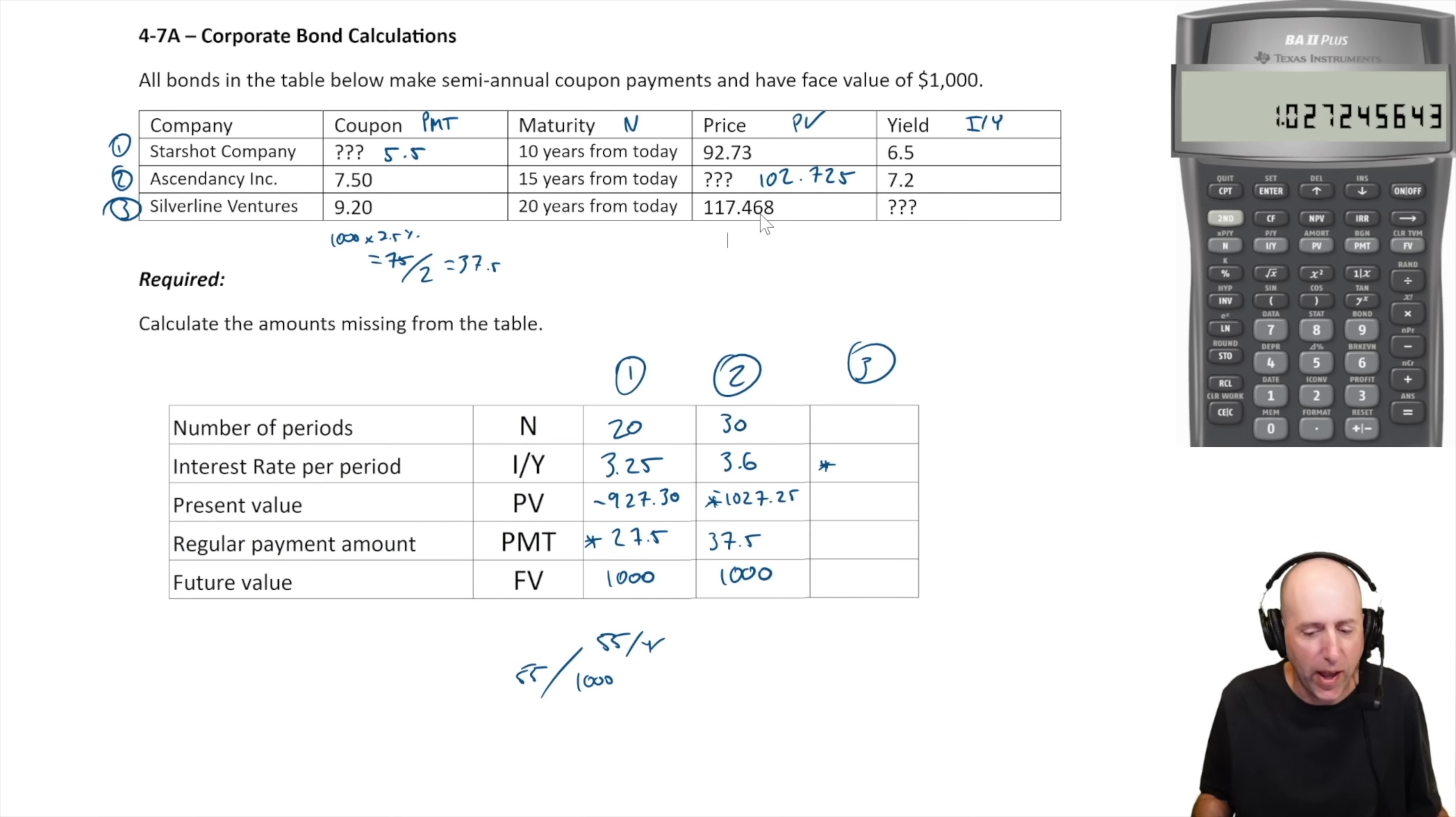Last one. Number of periods for bond number three, Silverline Ventures, is 20 years rather, so 40 semi-annual periods. Our PV is 117.468, so we have to pay $1,174.68 if we want to buy one of these bonds. I'll put that in as a negative. Our regular payment amount is based on the coupon again. Looking at the third bond here, 9.2%, so $1000 times 9.2% is $92 a year, divide by two is $46 every six months. And $1000 goes in as our FV.